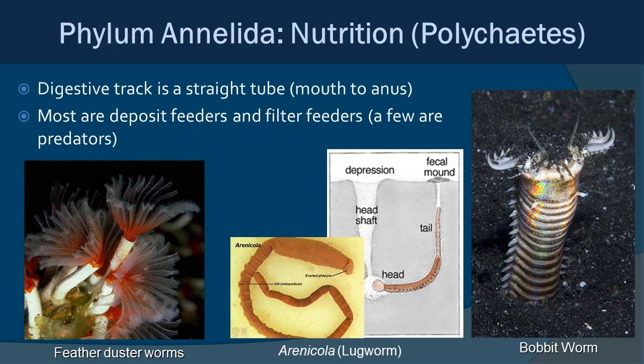In terms of nutrition, polychaetes have a linear digestive tract, but what they eat is quite diverse. Feather dusters are filter/suspension feeders that take particulates out of the water. The lugworm is a deposit feeder — they create U-type tubes in sediments and estuaries. The bobbit worm on the right is a major predator, going after invertebrates, crabs, and shrimp.